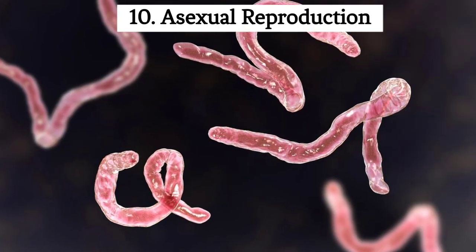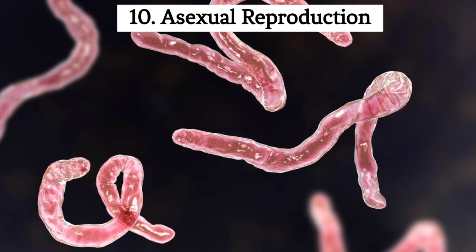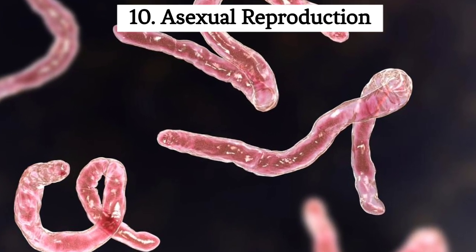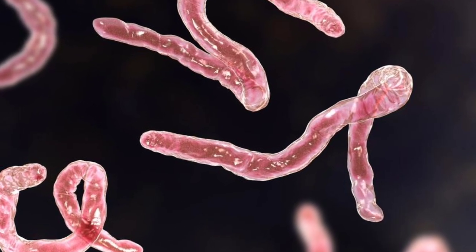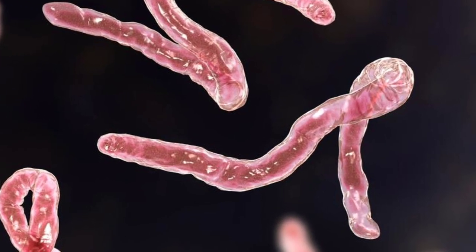10. Asexual reproduction. Some ribbon worms are capable of asexual reproduction through processes like fission or budding.